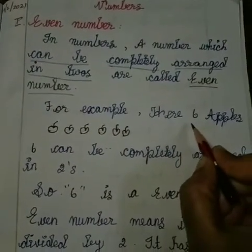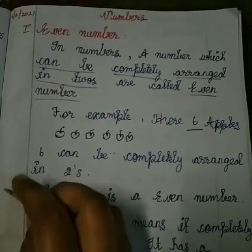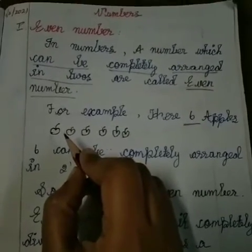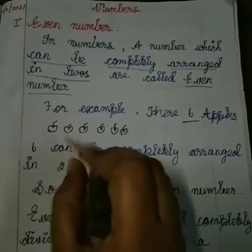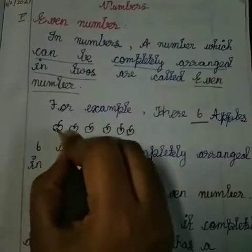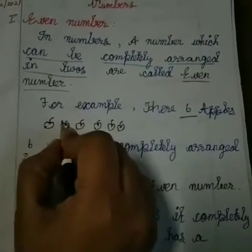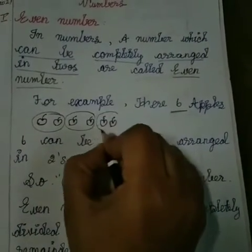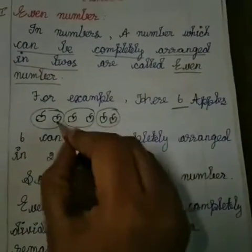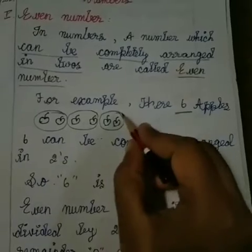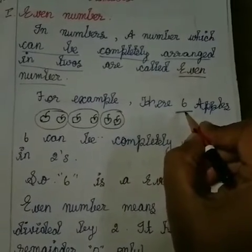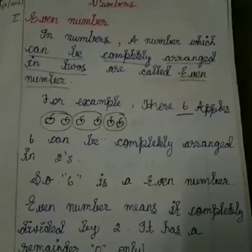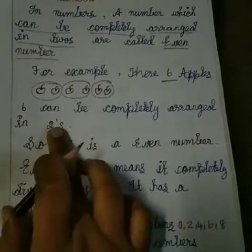Here is an example to clearly understand. There are six apples. We are going to split the six apples into pairs — pairs means two. Split them: one, two, three, four, five, six. First split the first two apples, then the next two, then another two. There is no remainder — they are completely arranged in two pairs. So six is an even number.